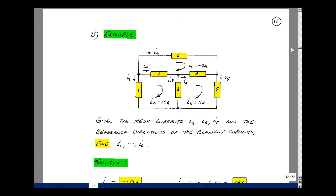Let's do an example. Suppose that I have these three meshes, i_a, i_b, and i_c. And suppose that I'm able to measure their values, and that i_a is 10 amps, i_b is 5 amps, and i_c is minus 3 amps. Now let me arbitrarily assign a current in each element.